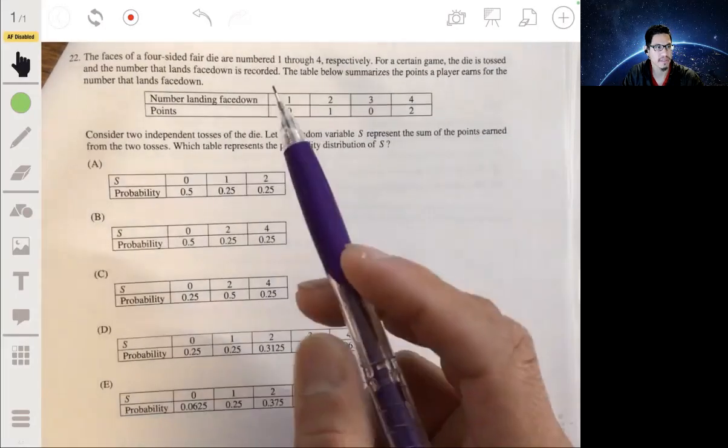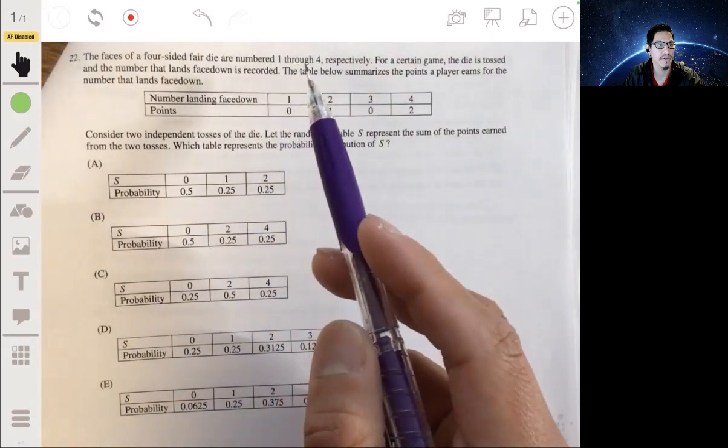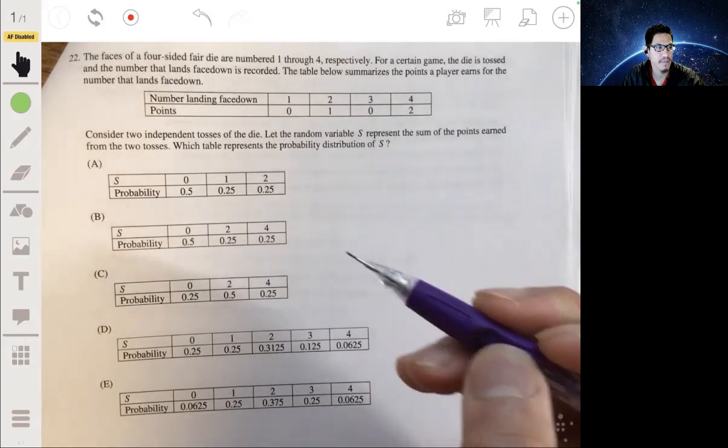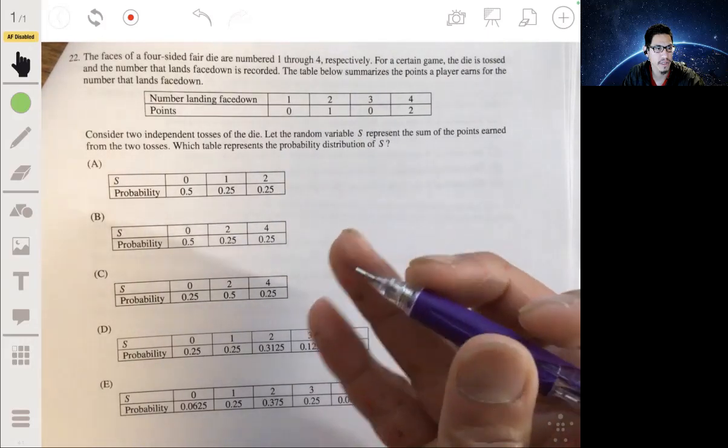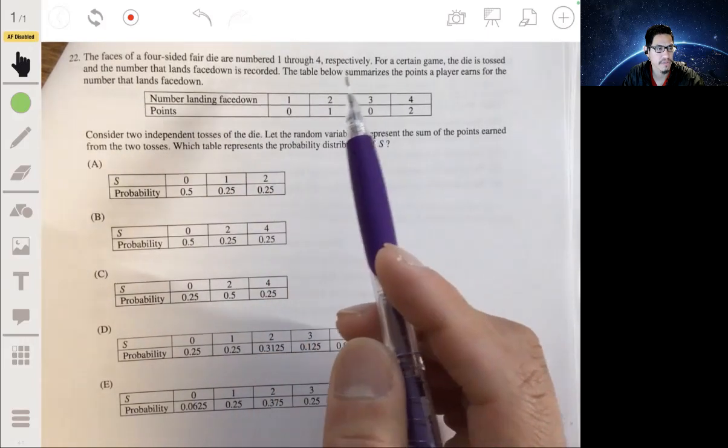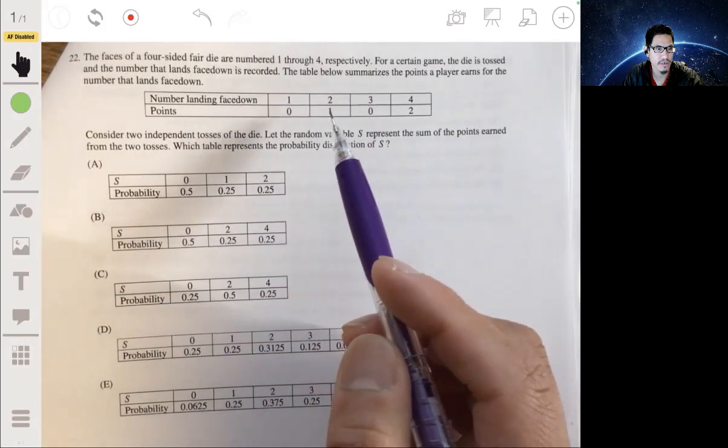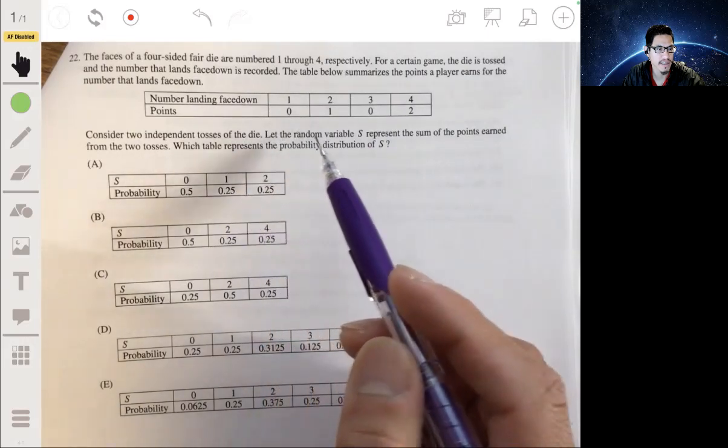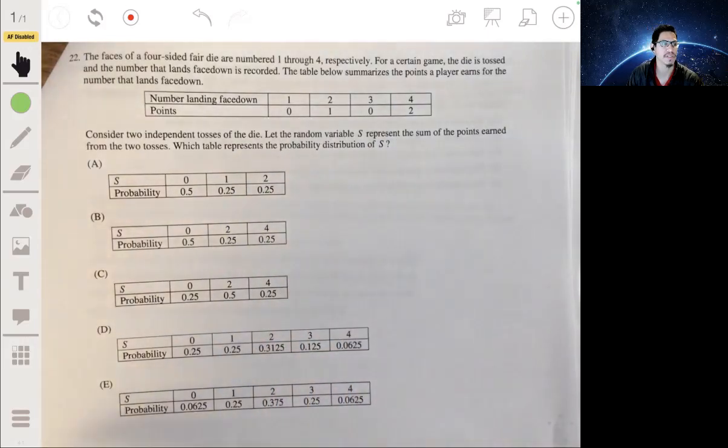All right, in 22, we have the faces of a four-sided die numbered 1 through 4. And for this game, the die is tossed, and the number that lands face down is recorded. This table summarizes the points a player earns for the number that lands face down.